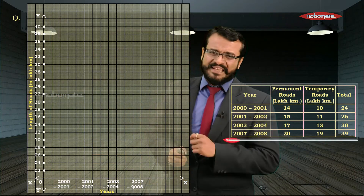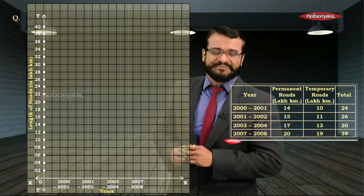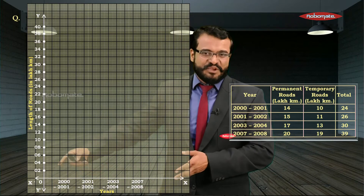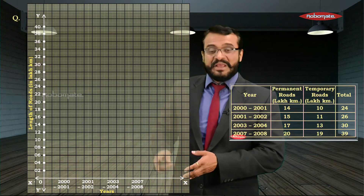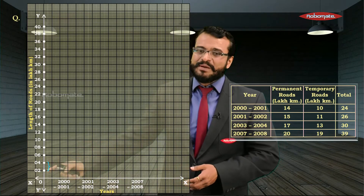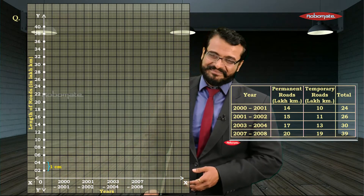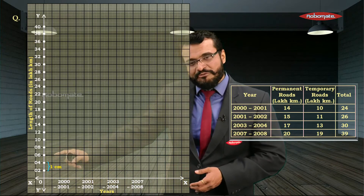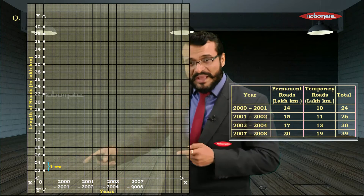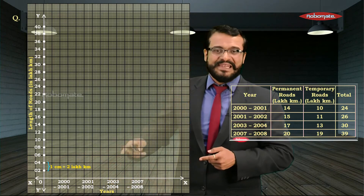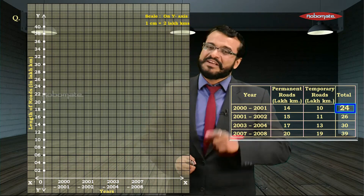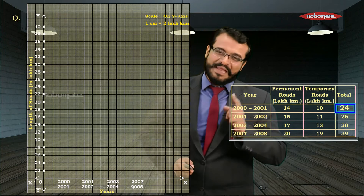There is no scale on the x-axis since it has subjective information, but we must write the scale for the y-axis. The gap between 2 and 4 is 1 centimeter and the difference is 2 lakh kilometres, so the scale is 1 cm = 2 lakh kilometres. Write this in a scale box at the top right corner.